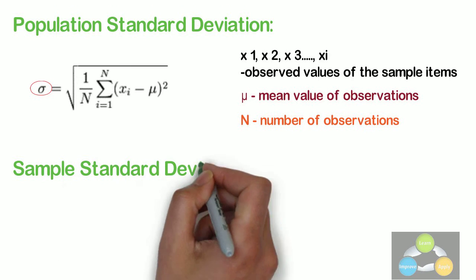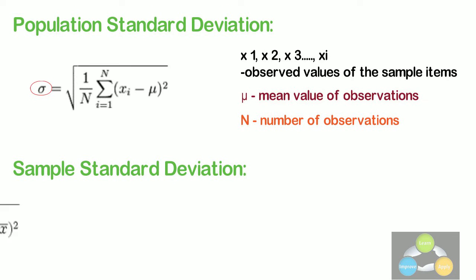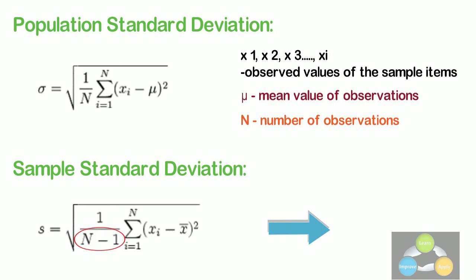And the sample standard deviation is calculated as S, which is equal to square root of 1 upon N minus 1, summation goes from i equals 1 to N, xi minus x bar bracket square. The only change is to divide by N minus 1 instead of N when calculating a sample standard deviation. We will see this concept in much detail in the study of major phase of Six Sigma. At this point of time, remember only the meaning of it.